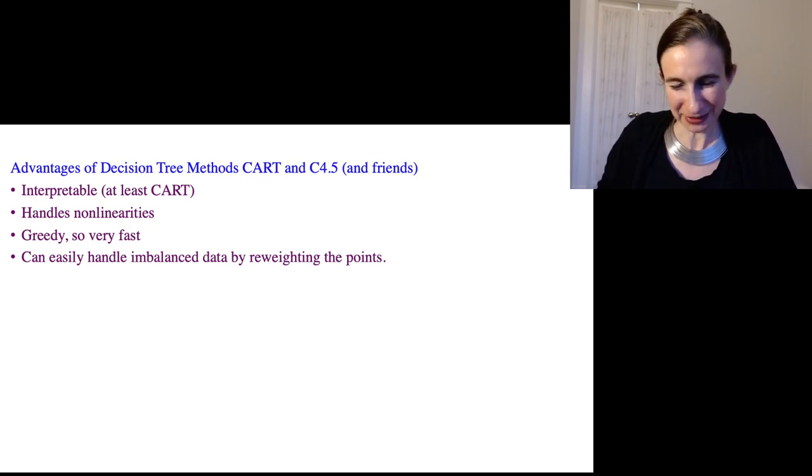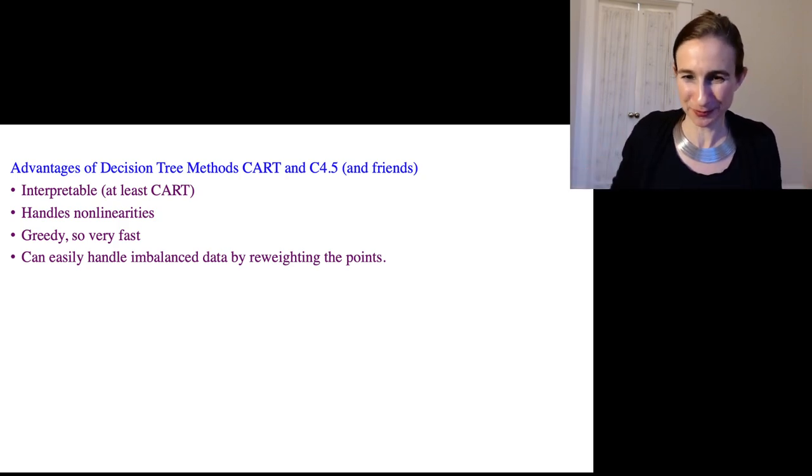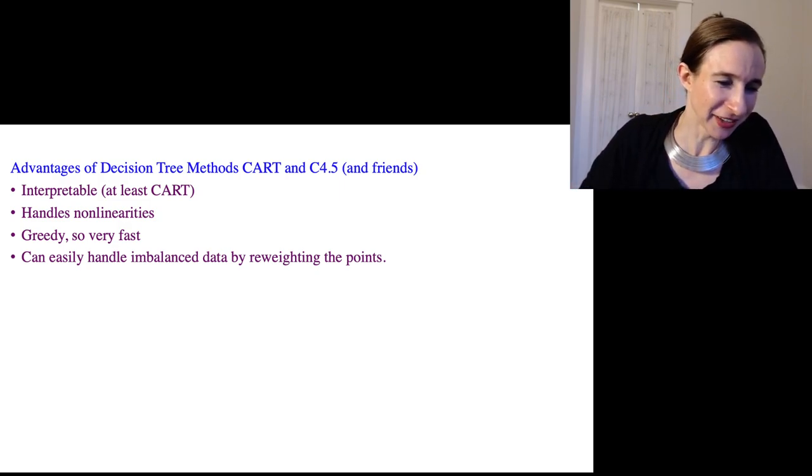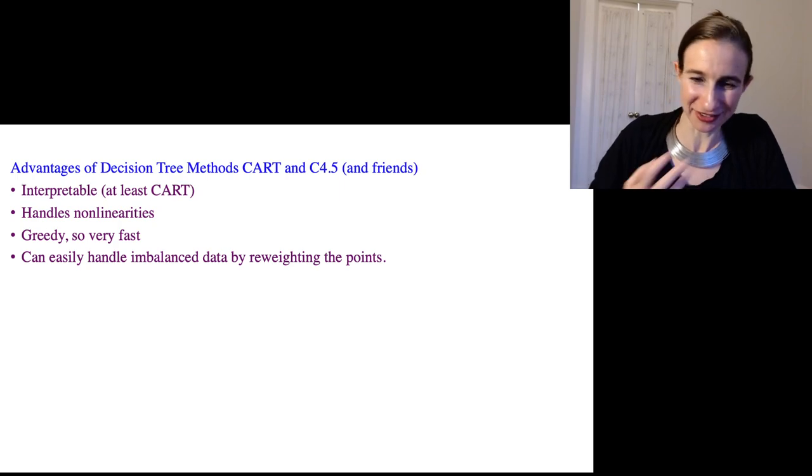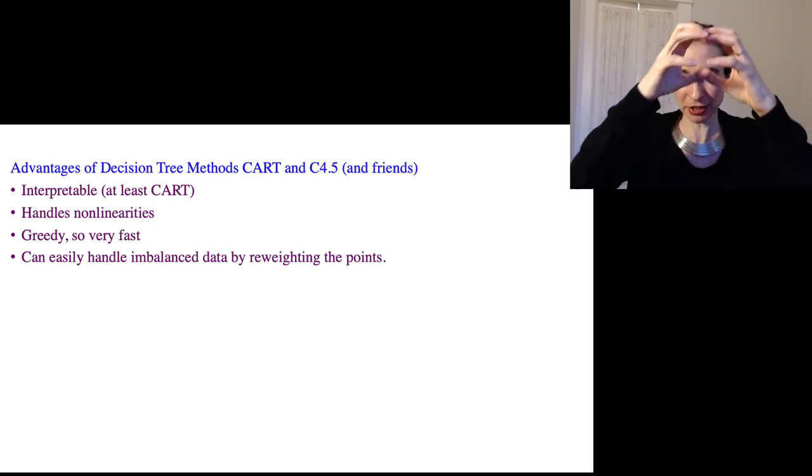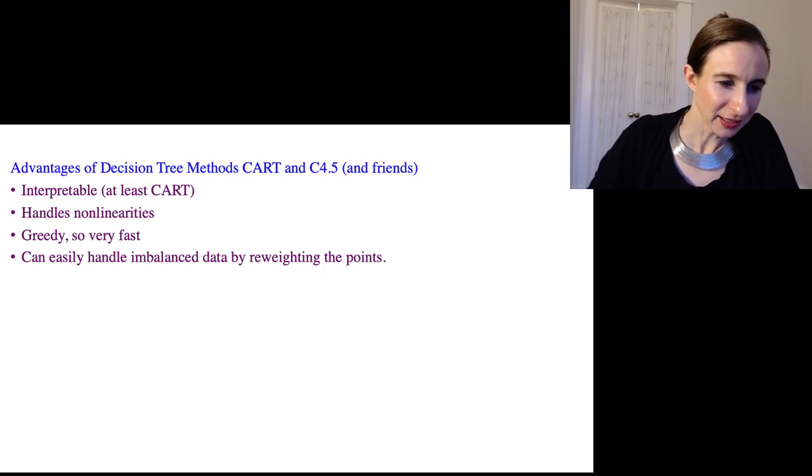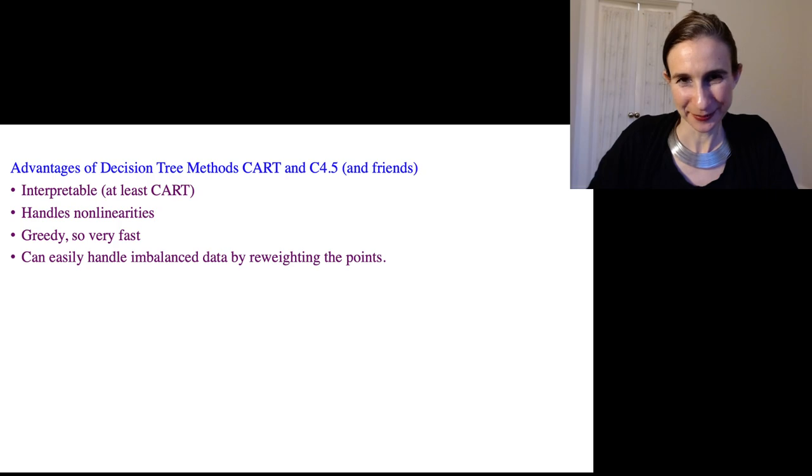Now, the good thing about decision trees is that they're interpretable, assuming you use CART or at least if you prune C4.5 all the way back. These models handle non-linearities very nicely because they're inherently non-linear. They're greedy, so they're very fast to construct because you're recursively partitioning the data into smaller and smaller pieces. And they can easily handle imbalanced data by reweighting the points, but the truth is they struggle with imbalanced data.